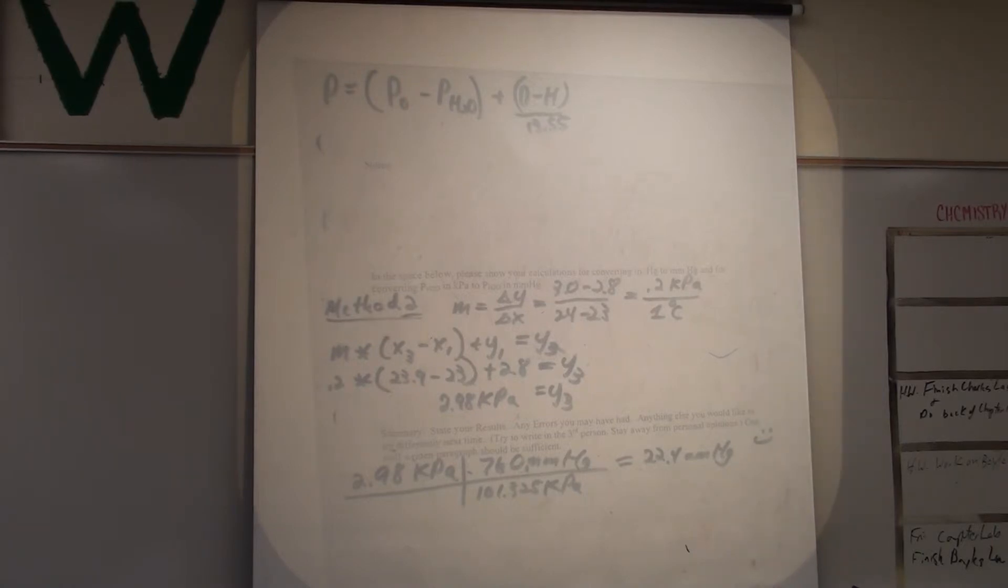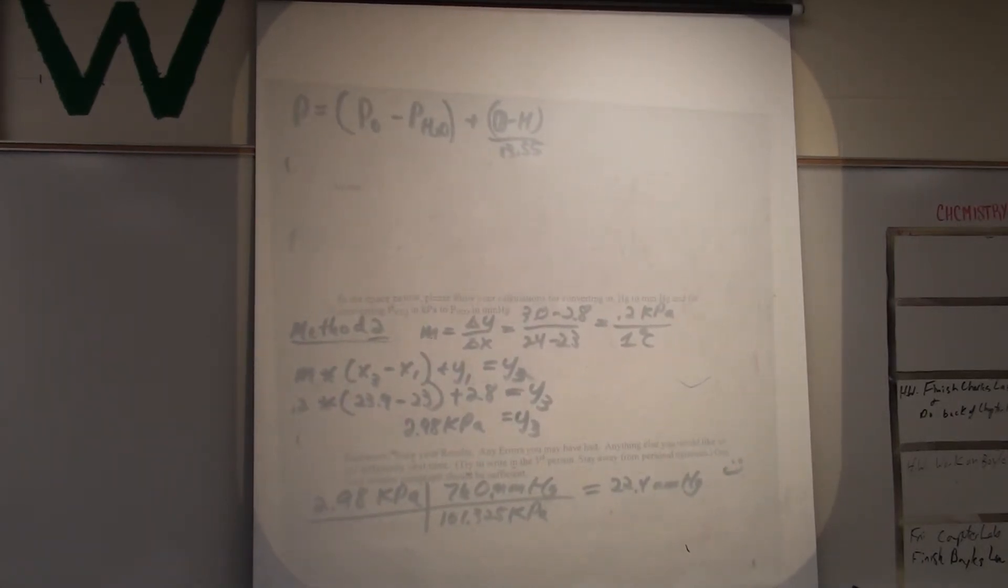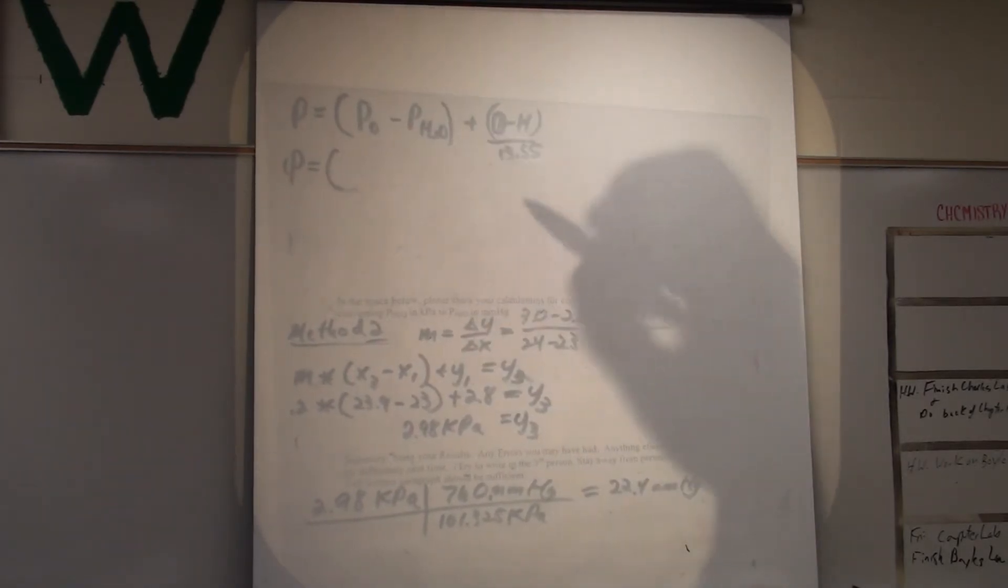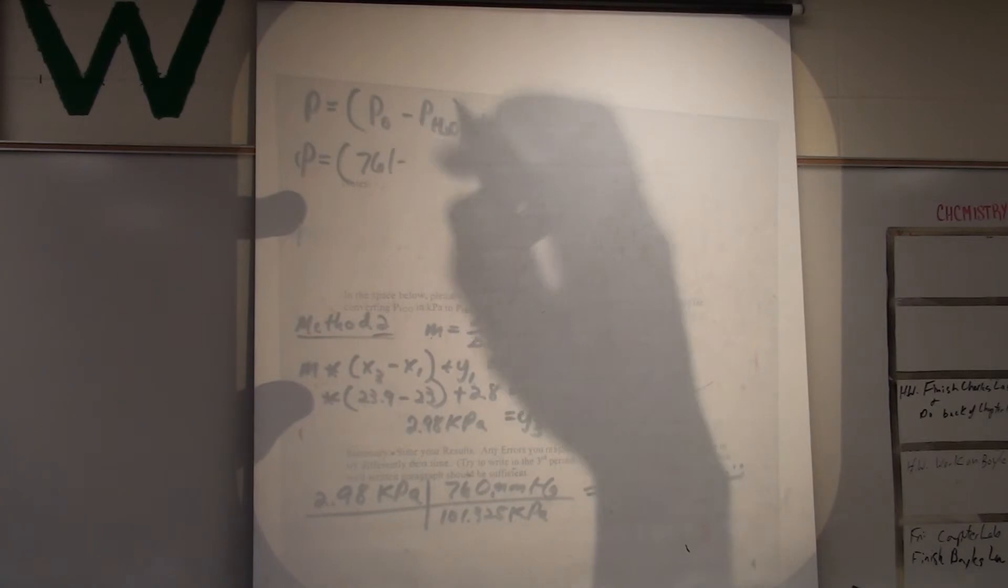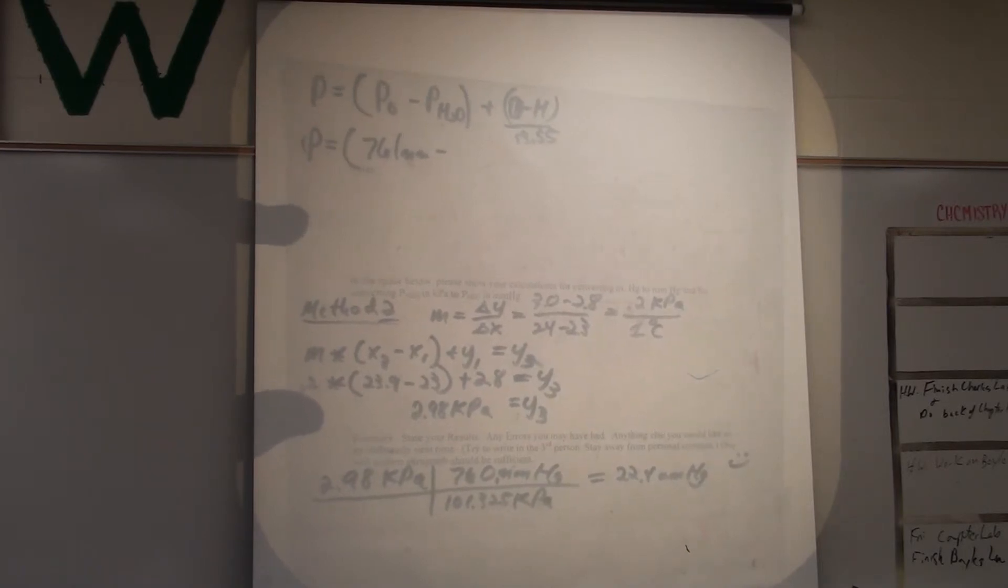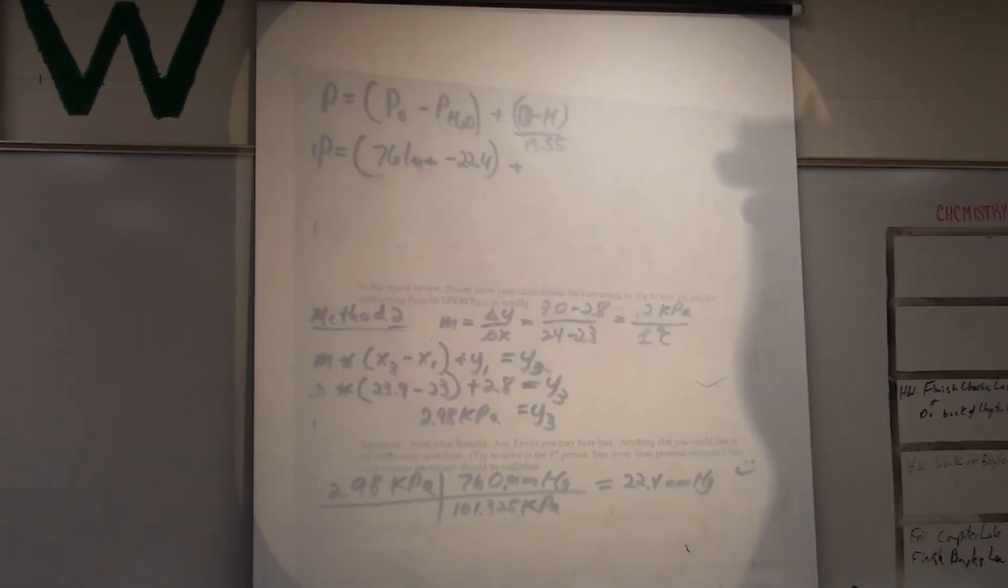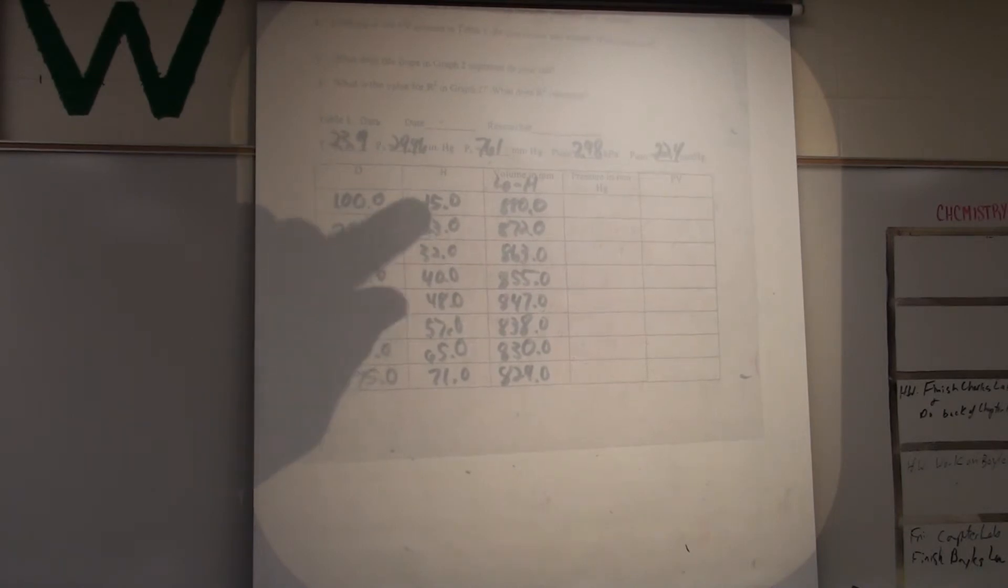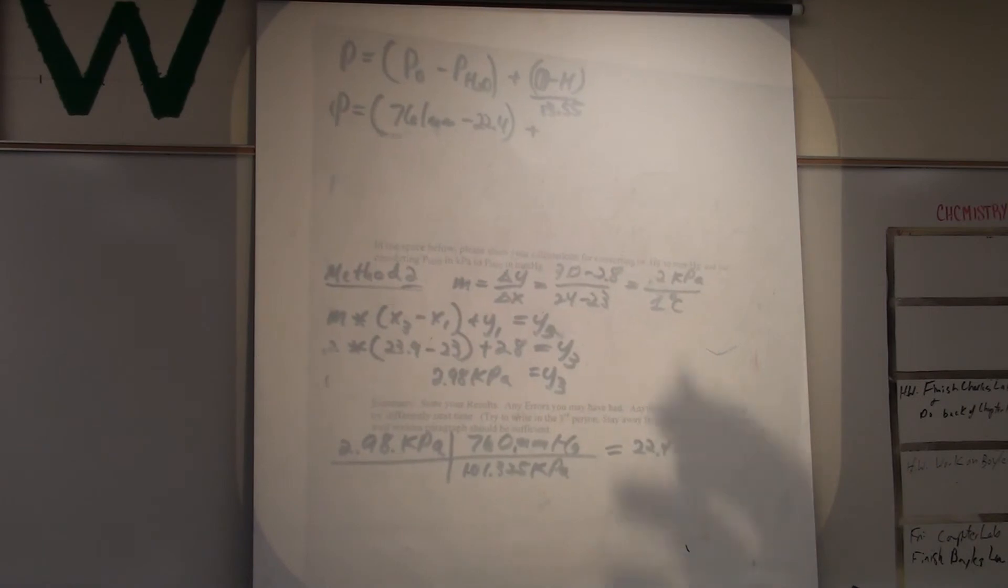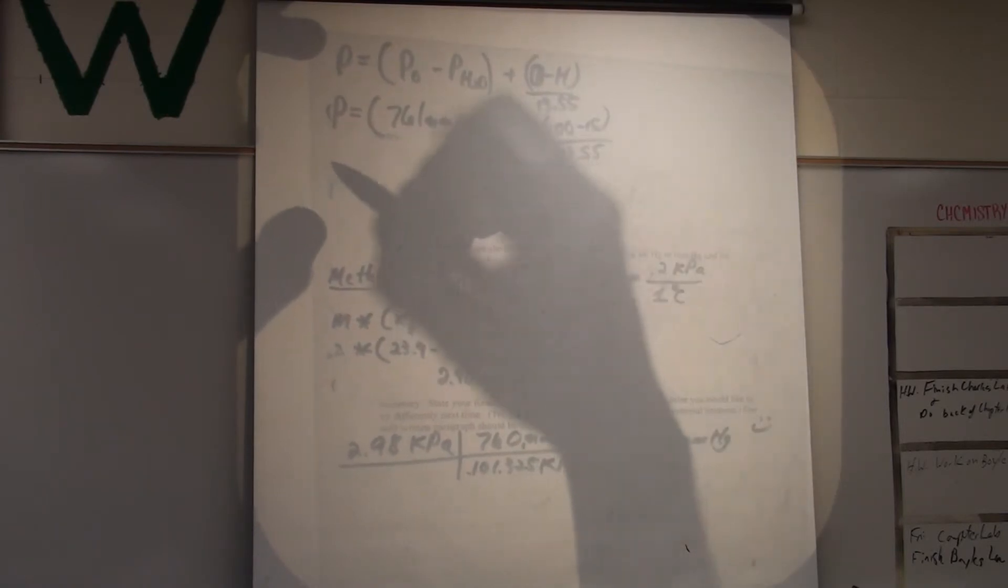Wait, is that an O minus D? That is D as in dog. So, the atmospheric pressure was 761 millimeters of mercury. We're subtracting off our vapor pressure because we collected the gas over water. We want to subtract out the pressure due to water, so minus 22.4. Add to that D minus H. So, the first D is 100, the first H is 15. Of course, you're using your own data.